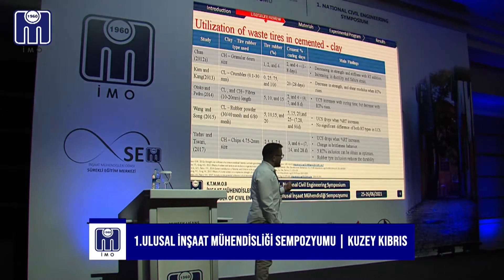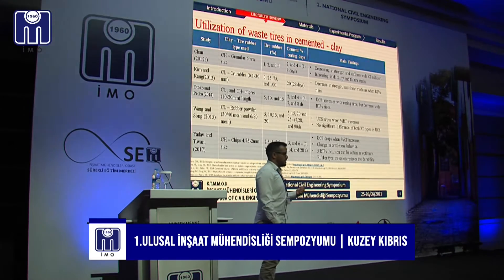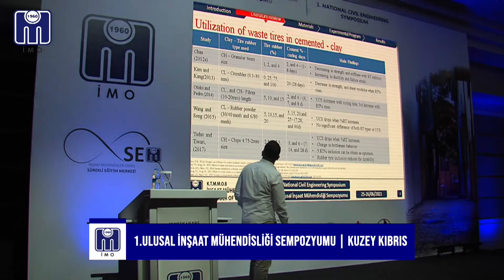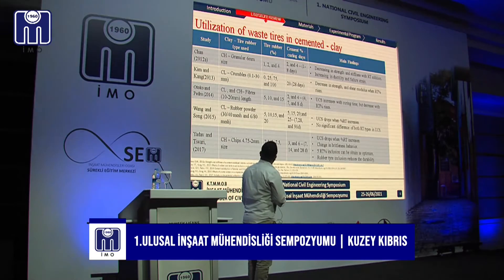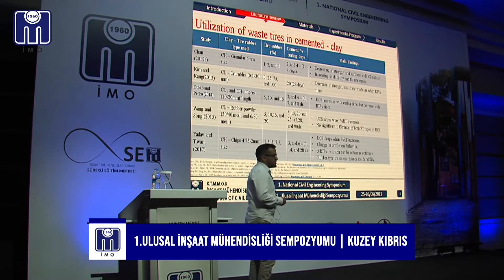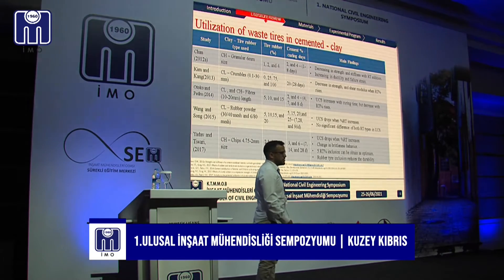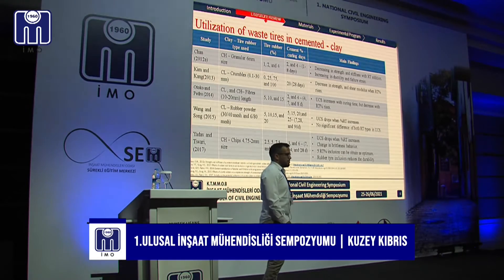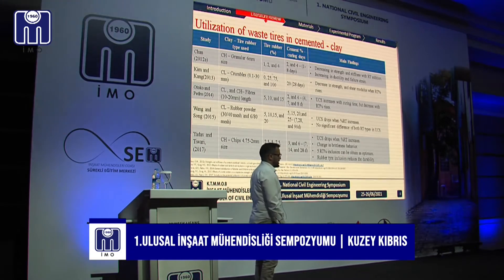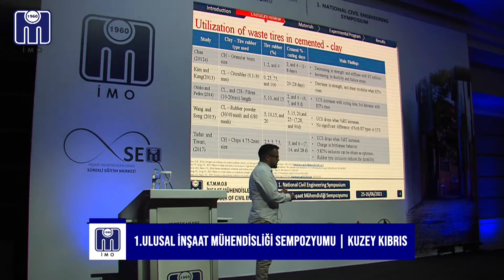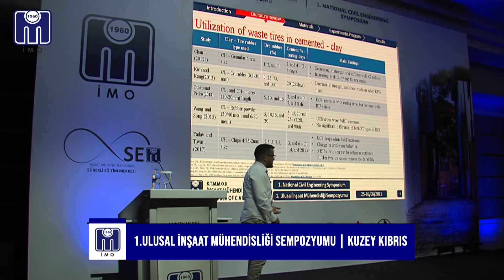These are some studies related to my research. They used different types of tire rubber with different soil types and different percentages of cement and tire. The main findings show that most researchers reported a decrease in compressive strength when treating cemented soil with tire rubber, but some reported a change in brittleness behavior — the material changed from brittle to more ductile, which can be beneficial for certain civil engineering purposes.